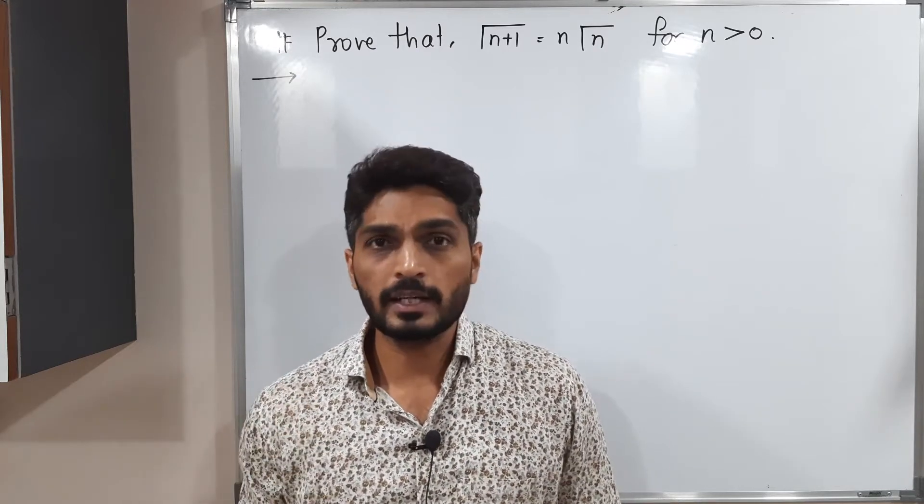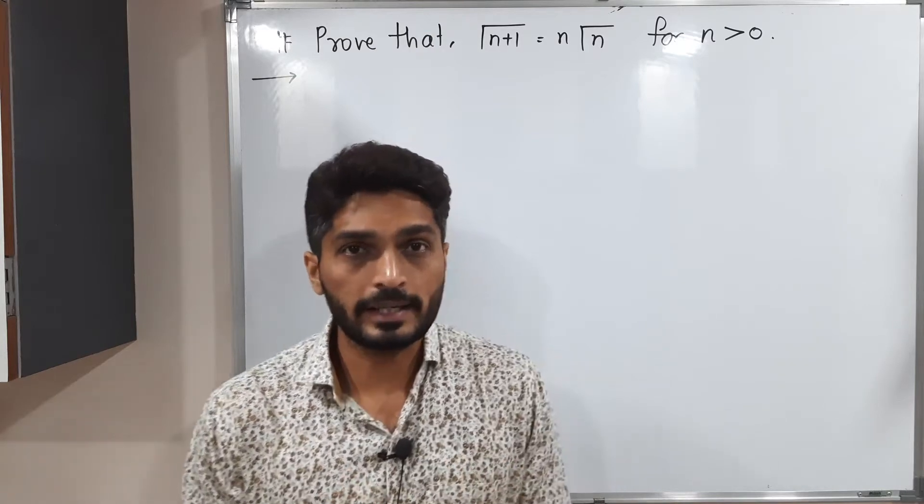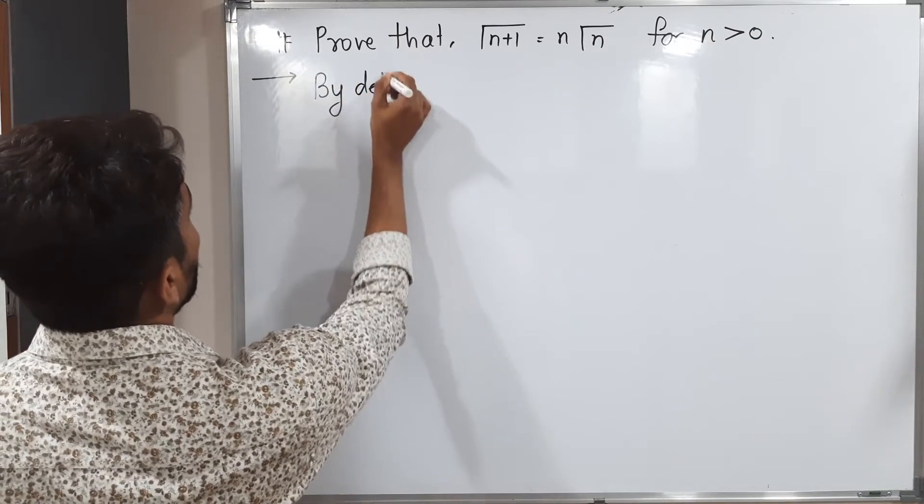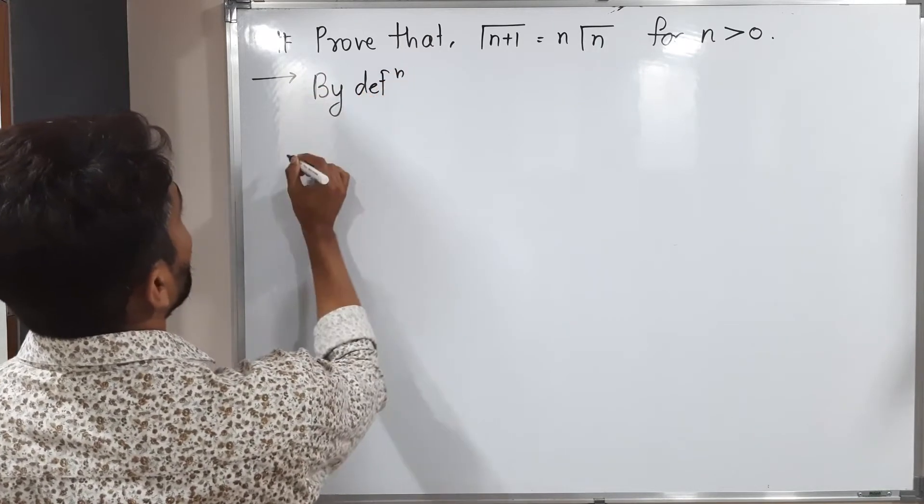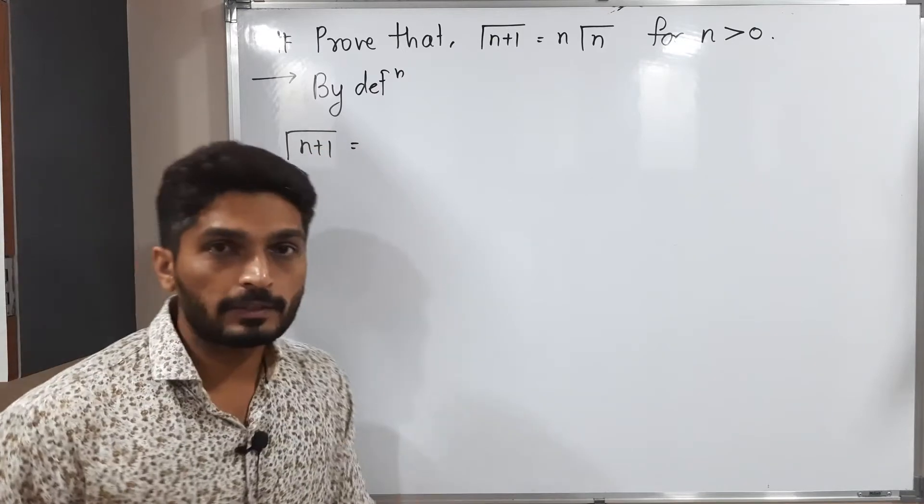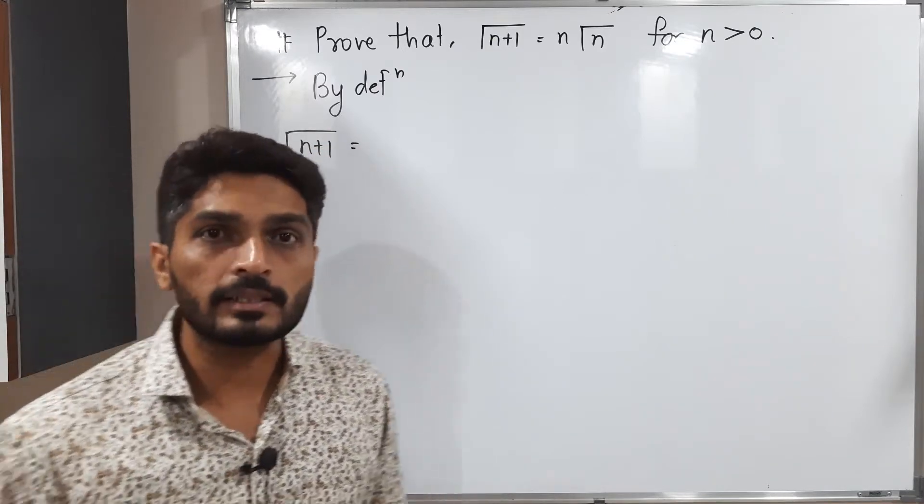So let us start with the left-hand side and we will try to bring the right-hand side. So let's start. So I'm going to use the definition, so that's why I'm writing by definition gamma n plus 1. I'm using the simpler definition of the gamma function which you have already seen in the previous video.